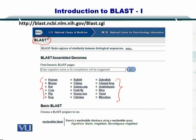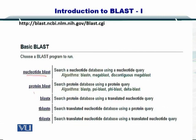BLASTing is a commonly used term by bioinformaticians, which essentially means comparing the sequences. If you scroll down this page, you will find that there are several types of BLAST, such as nucleotide BLAST, protein BLAST, BLASTX, TBLASTN, and TBLASTX. You need to be in a position to select which kind of BLAST algorithm you want to use, as each one of them has a specific purpose.